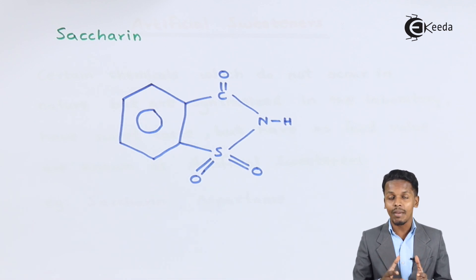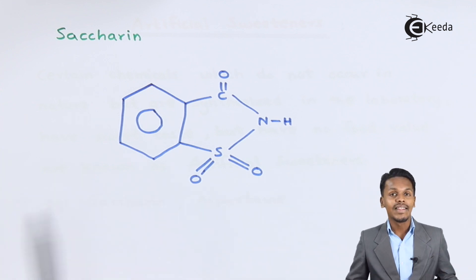This is the structural formula for saccharin. Saccharin is in fact 550 times more sweeter compared to cane sugar that is obtained naturally.